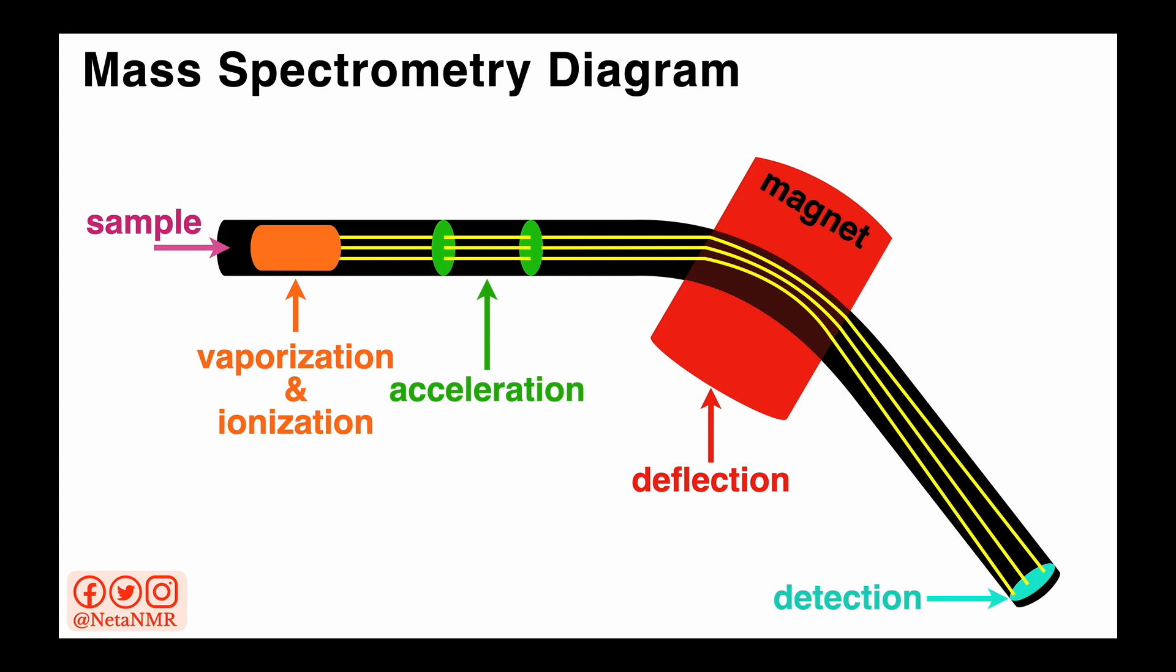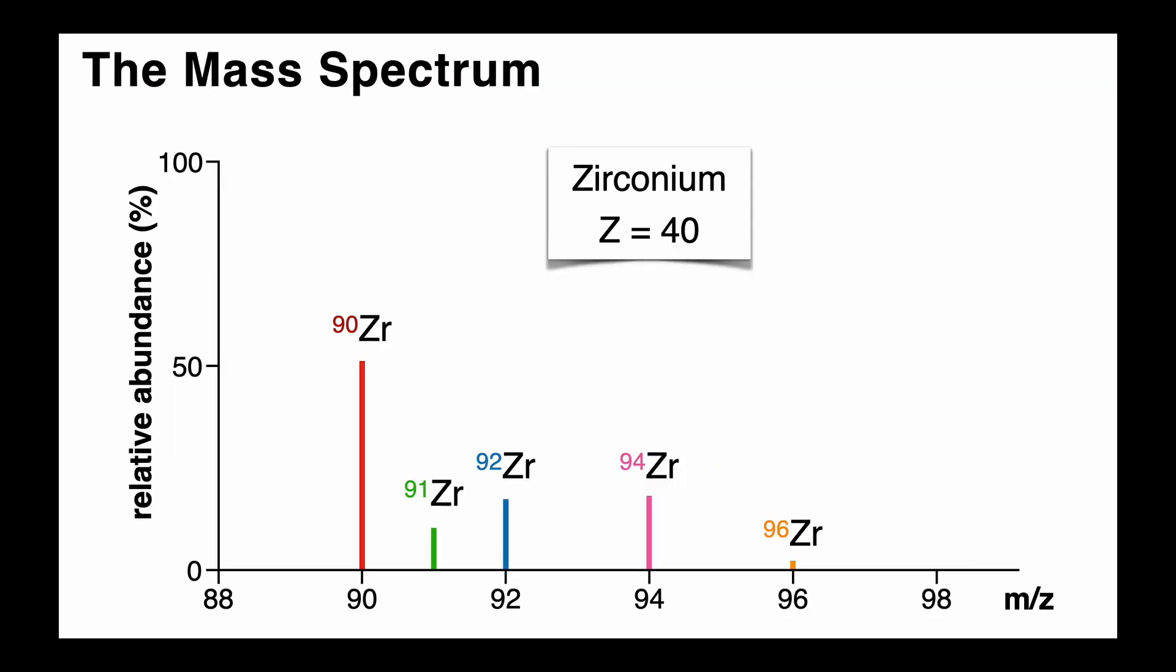By analyzing how much of the ions of each type reach the different areas of the detector, we can find out how much of each is present. And that's exactly what we can read in a mass spectrum.